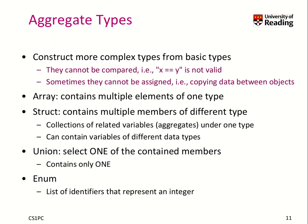Next we talk about aggregate types, which means we construct more complex types from basic types. Typically, an aggregate type cannot be compared — you cannot run any comparison operator like equal-equal or greater-than-or-equal and so on. There are aggregate types that you can assign to each other, and there are also those that you cannot assign.